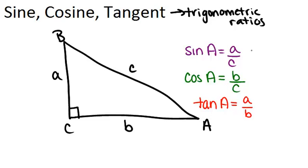So if you look at these three different ratios, we've accounted for all the different combinations of a, b, and c. This is how sine, cosine, and tangent work.